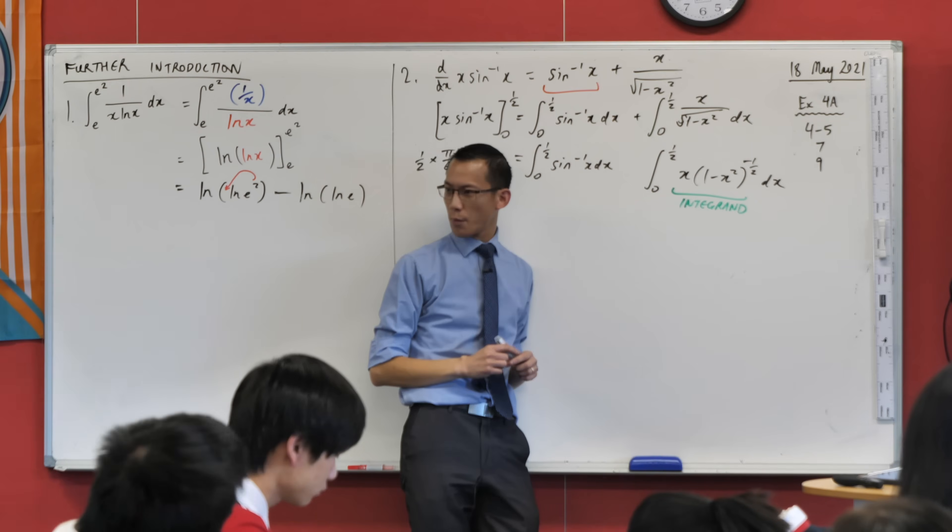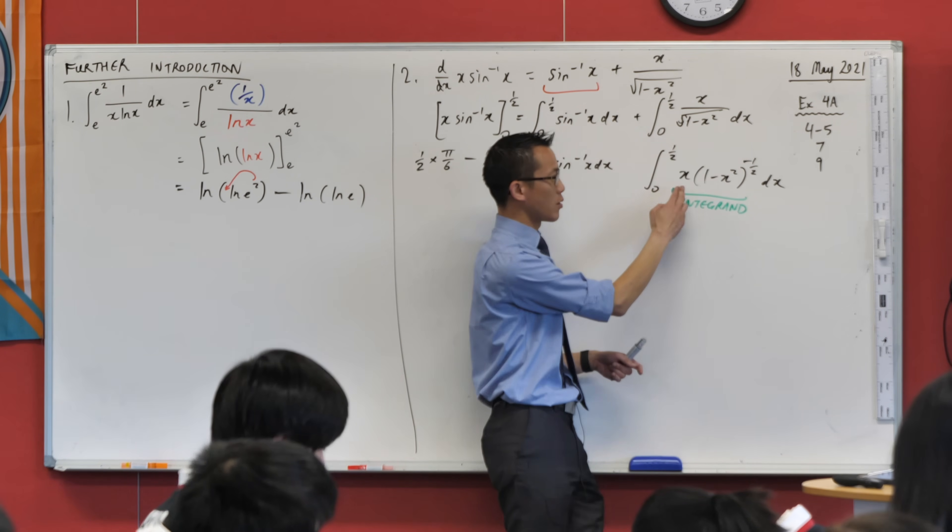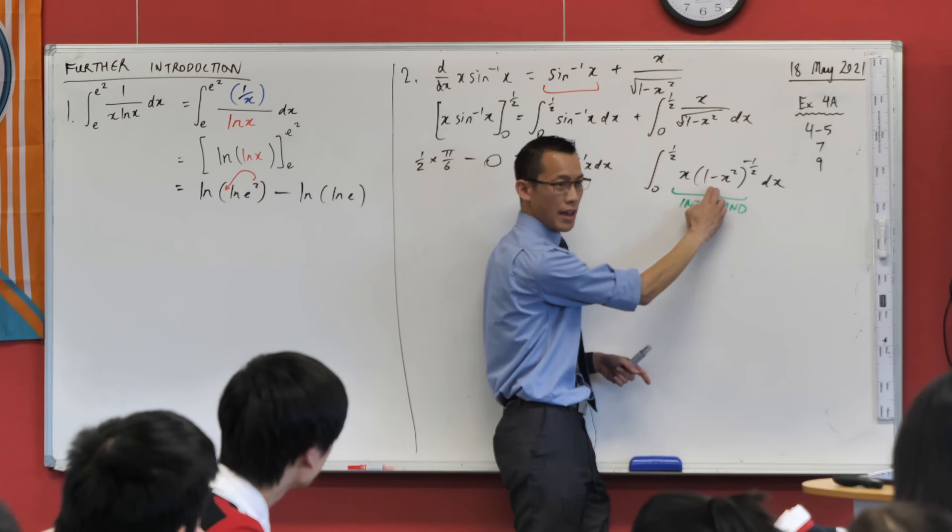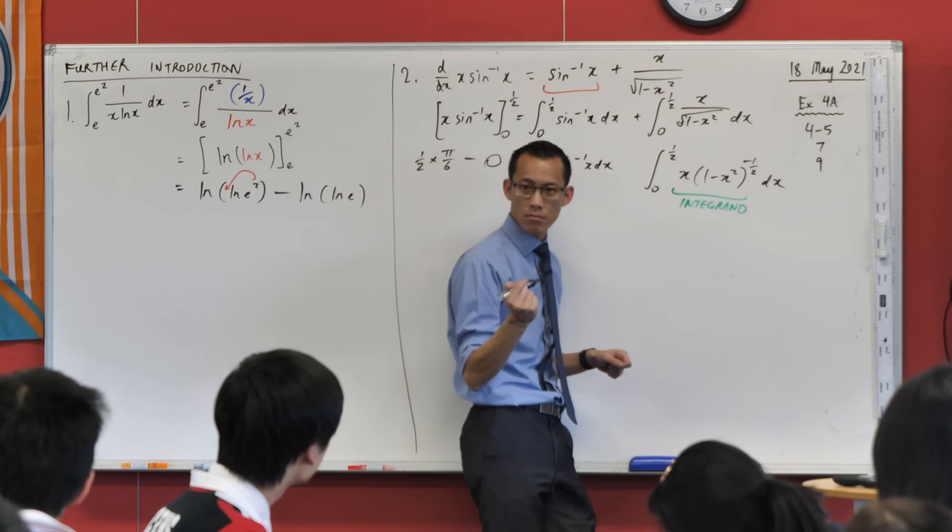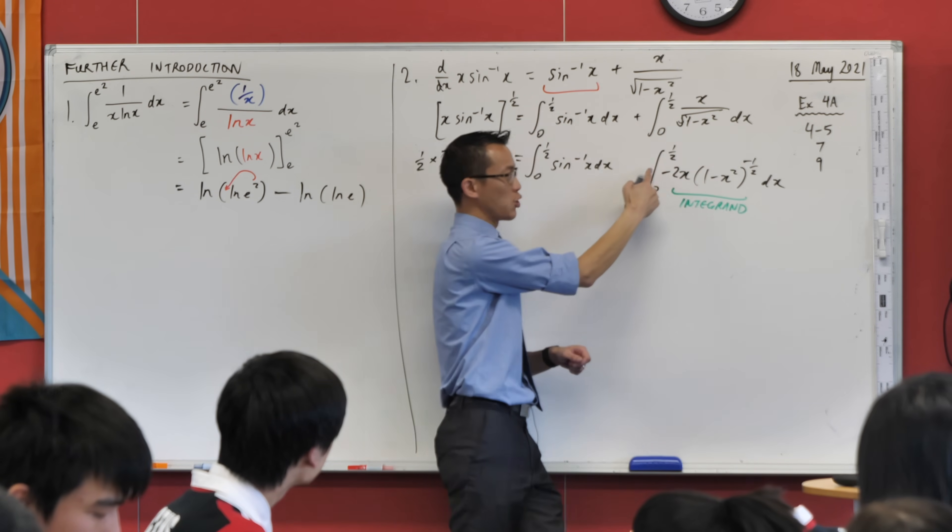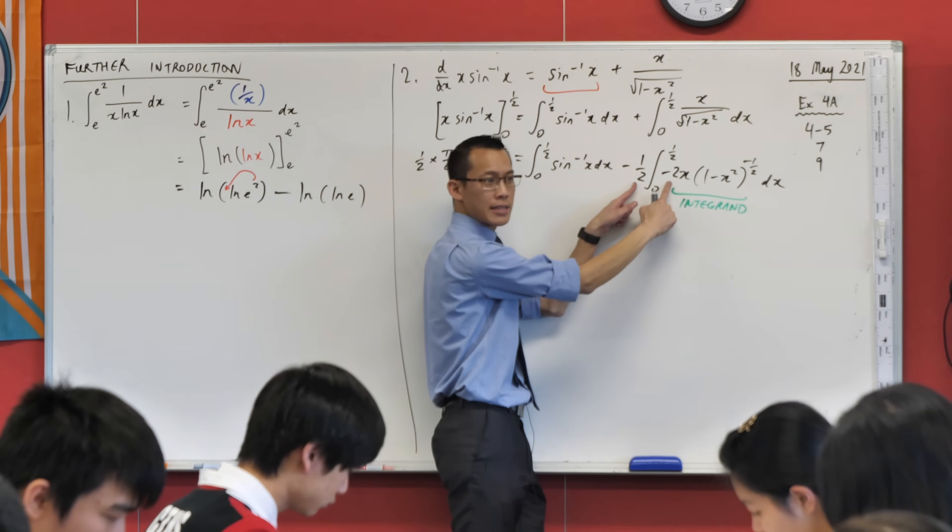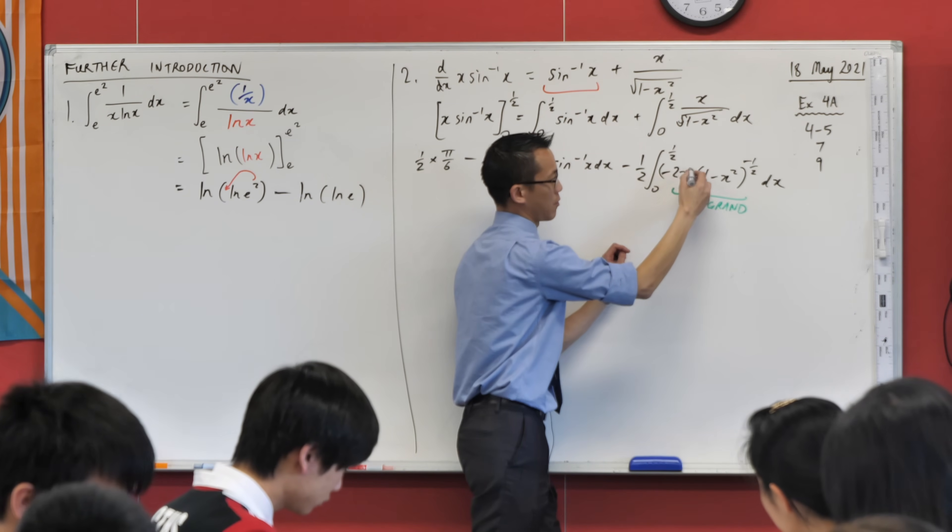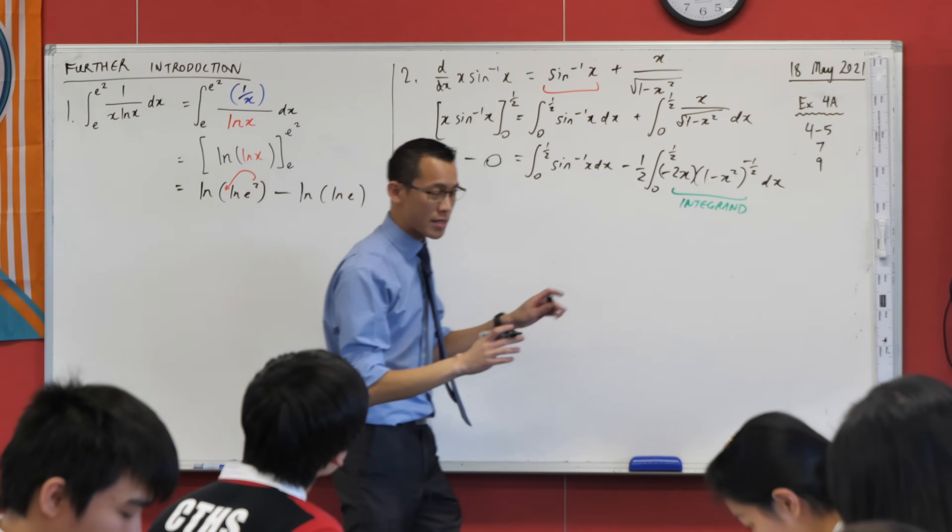This is reverse chain rule, or will be in a second. So I want some kind of f dash f situation. I'm almost there. How do I need to change it? That minus 2x will do it, which means that to compensate over here, I should have a minus a half. So that's balanced out. Now I'm going to pause there.